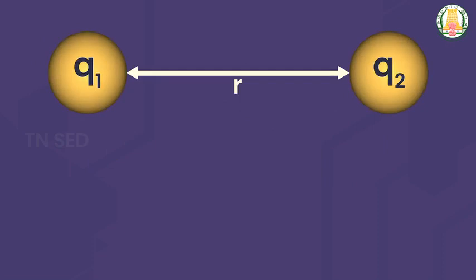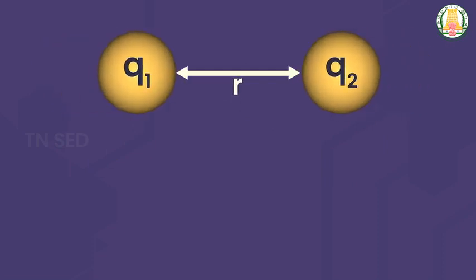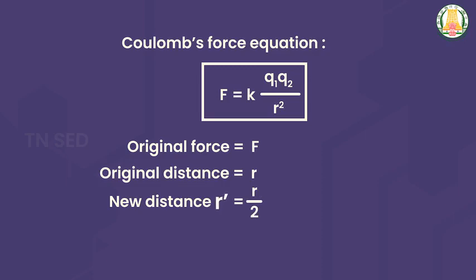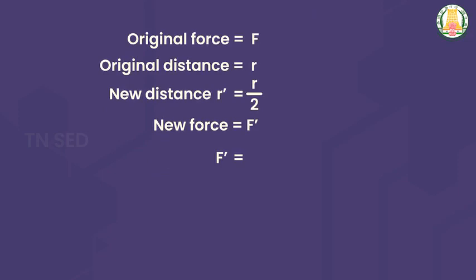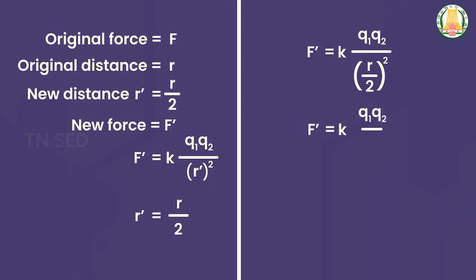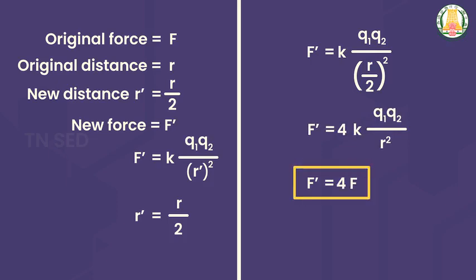Now consider a problem: you have two charges Q1 and Q2. The original distance between them is R and the original force is F. The new distance R' = R/2. The new force F' = K × Q1Q2 / (R/2)² = K × Q1Q2 / (R²/4) = 4K × Q1Q2 / R². Therefore, F' = 4F. When the distance is halved, the force becomes four times greater.